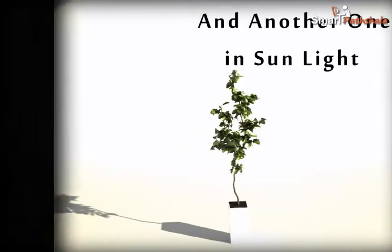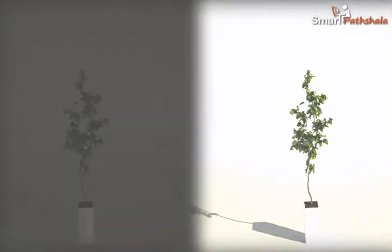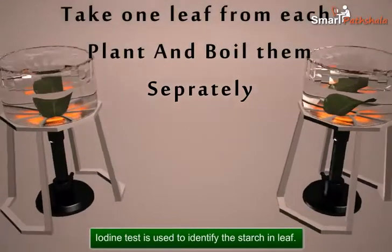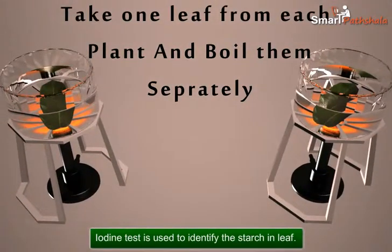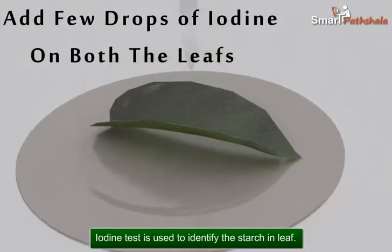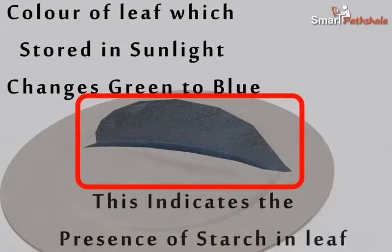Now let us pluck one leaf from each plant and perform an iodine test. Boil the two leaves separately and place them each on a glass plate. Now add a few drops of iodine on each leaf. We can observe the color change from green to blue in the leaf which is exposed to sunlight. This indicates the presence of starch in it.